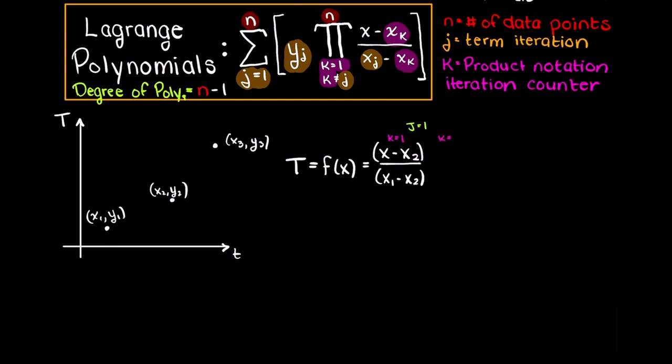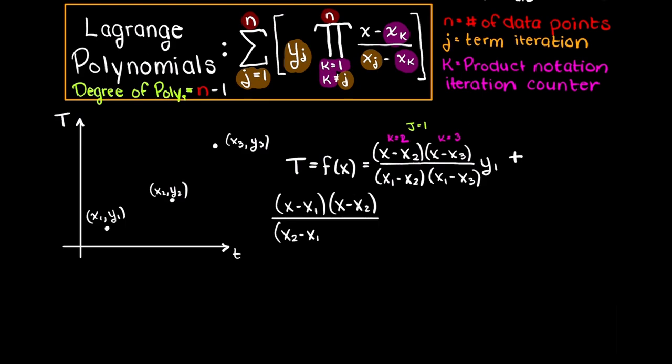This would lead to all terms going to 0, which I will explain in a minute. We begin with k equals 2 since it cannot equal 1. We have our input variable x minus x2 over xj (which is x1) minus xk (which is x2), and because this is product notation we multiply our next iterations until we reach n, which is 3 for this example. Through the same logic we have the following, and this is all we need for our first term. Now we will create our new terms as the summation tells us, completing the remaining terms using the same logic.